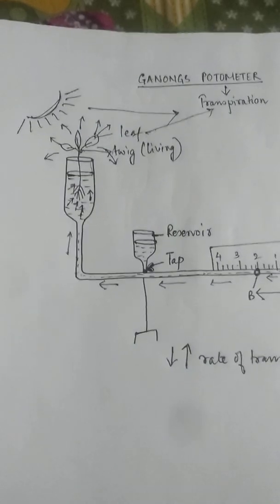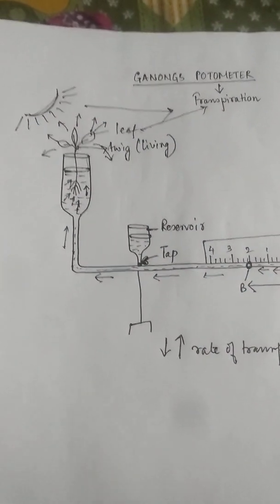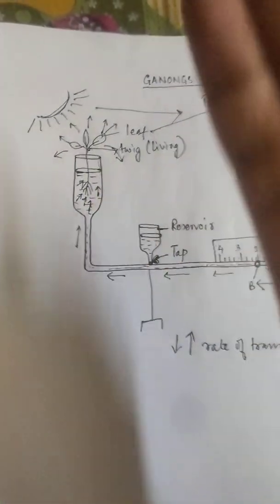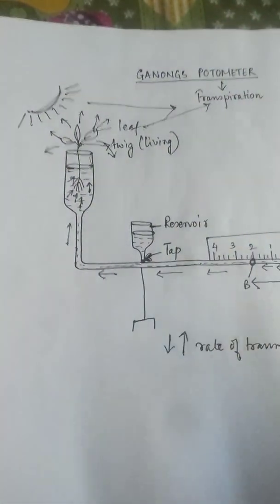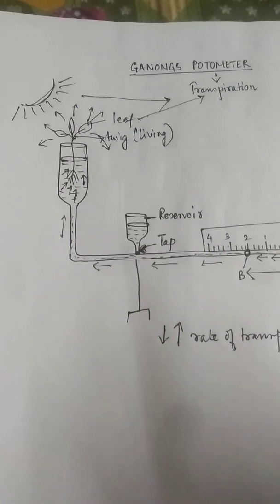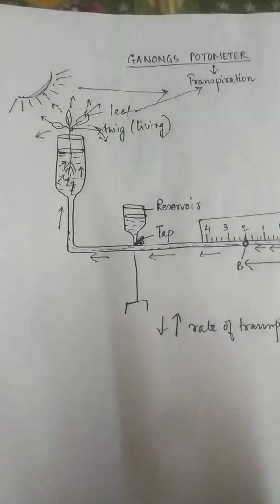And this rate of transpiration is also dependent upon in what environmental circumstances I am putting this twig. See over here I am putting it under sunlight. See the sunlight during the noon time. It is very harsh.